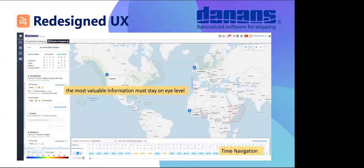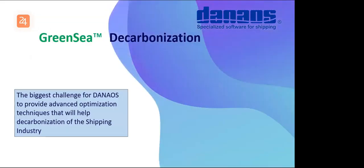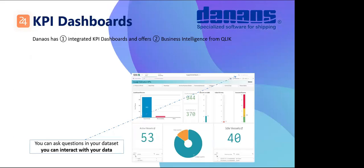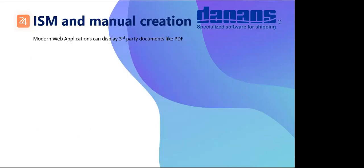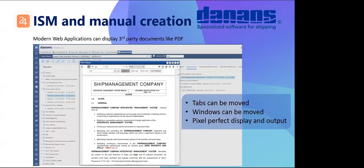For example, it was not easy to show maps before. Now, with the technology — you know from Google Maps and everything — it's far easier to put information on maps. And of course there are KPIs, which is another story, and things that we can do now on the web.